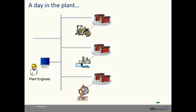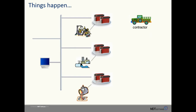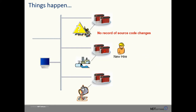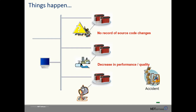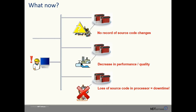Consider the day in the life of a plant engineer. Everything's okay, so the plant engineer decides to go to lunch. While he's at lunch, things happen. A contractor comes in and deploys a change, but you don't have a record of that source code change. A new hire decides to make a programming change that's perhaps less than optimal, resulting in a decrease in performance or quality. And accidents happen — if an accident takes out the processor, that means loss of source code and downtime. So if you're the plant engineer, what do you do now?